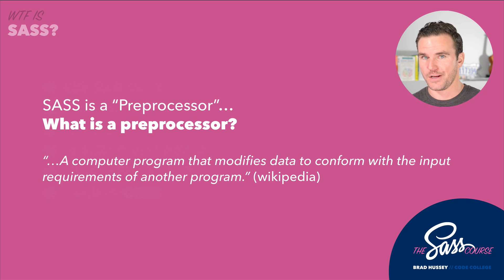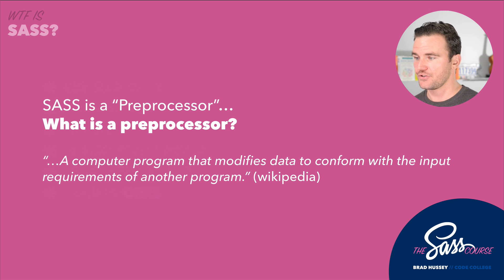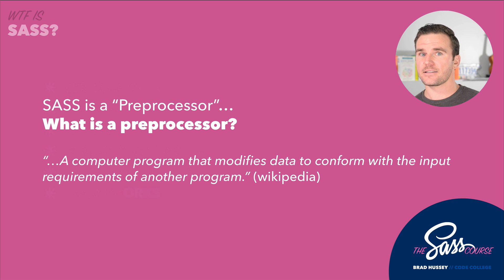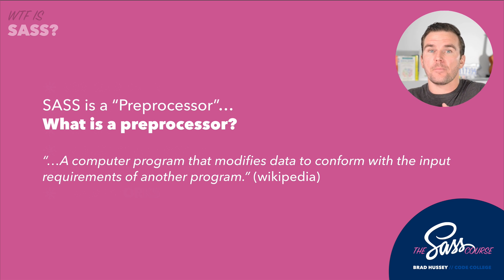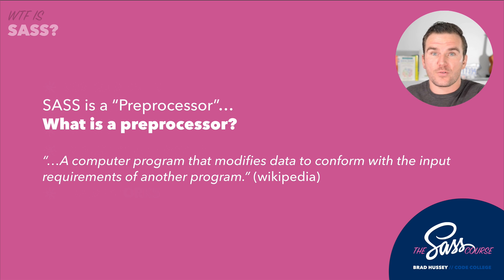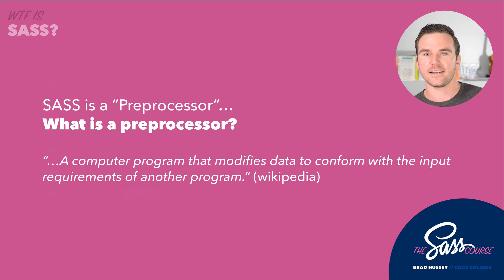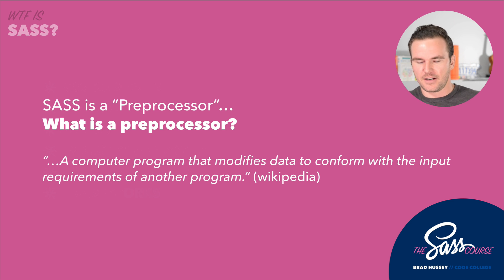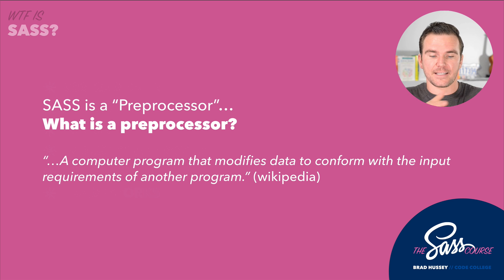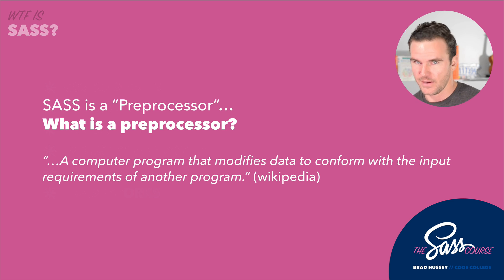You might be wondering: what is a pre-processor? Wikipedia defines it as a computer program that modifies data to conform with the input requirements of another program. To relate that to SAS: you open your code editor, you write some SAS, it runs through a compiler, and then it spits out CSS. It gets processed through that compiler so that the browser reads CSS, but you wrote SAS. It's like a translator — first you write SAS, it gets compiled, and then in the browser they read CSS.